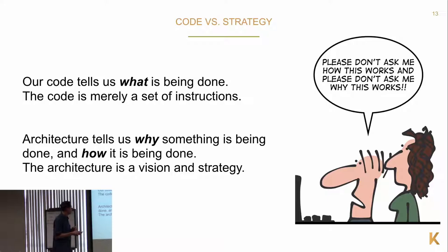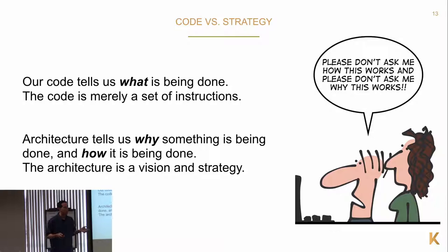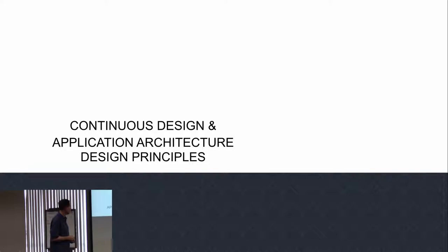Code versus strategy: the code tells us what is being done — it's merely a set of instructions. Architecture tells us why something is being done and how it is being done. Architecture is a vision of strategy. Saying 'the code is our documentation' doesn't address why we're doing this or how it should be done. Code is just instructions for a process.